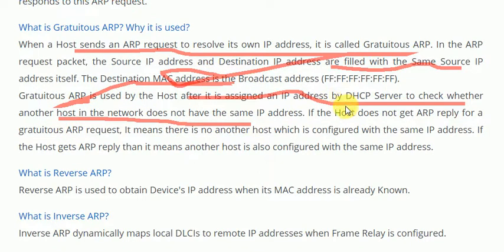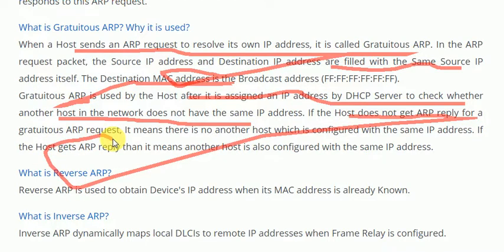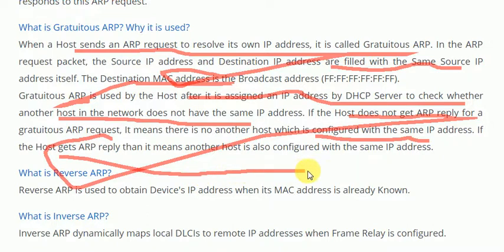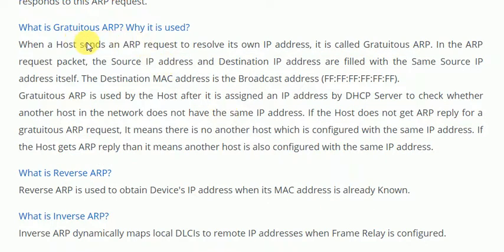Gratuitous ARP is used by the host after it is assigned an IP address by the DHCP server, to check whether another host on the network does not have the same IP address. If the host does not get an ARP reply to its gratuitous ARP request, it means no other host is configured with the same IP address. If the host does get an ARP reply, it means another host is also configured with the same IP address.